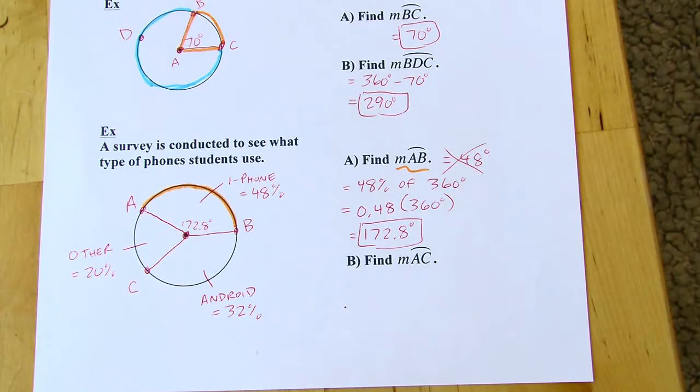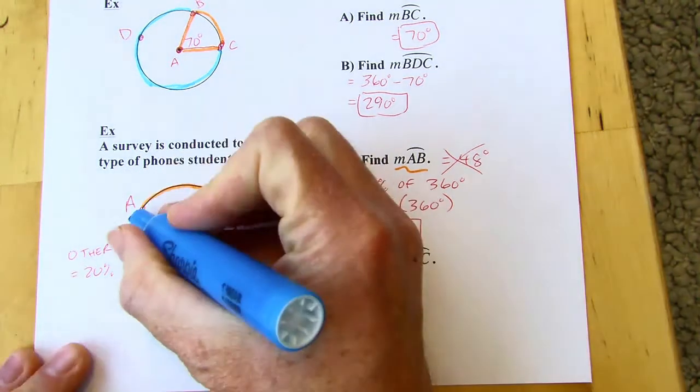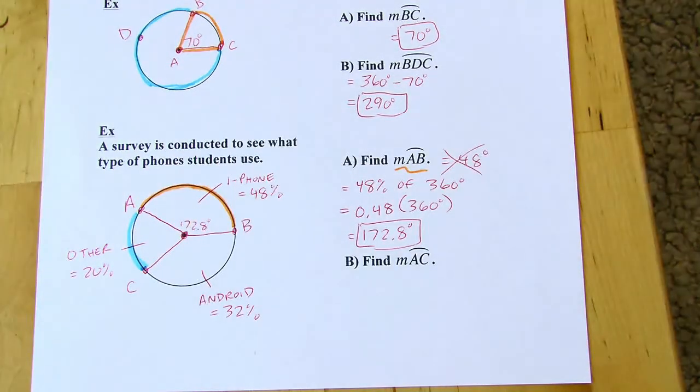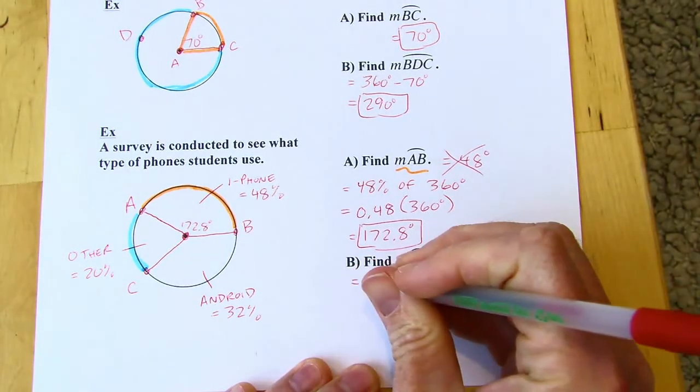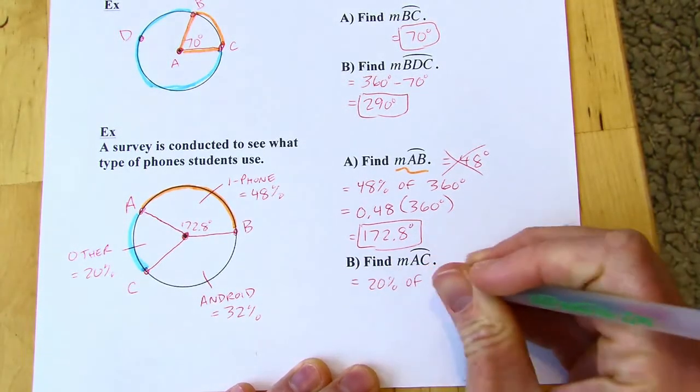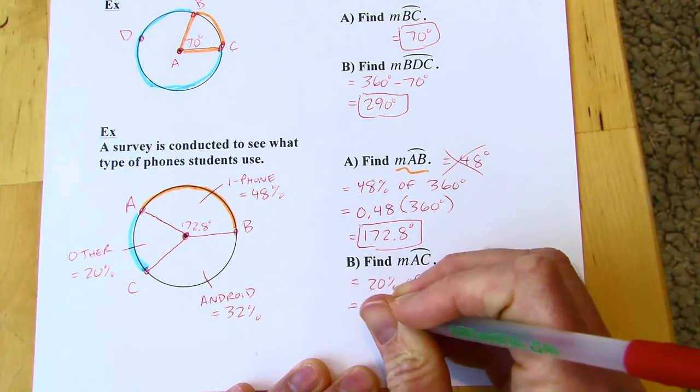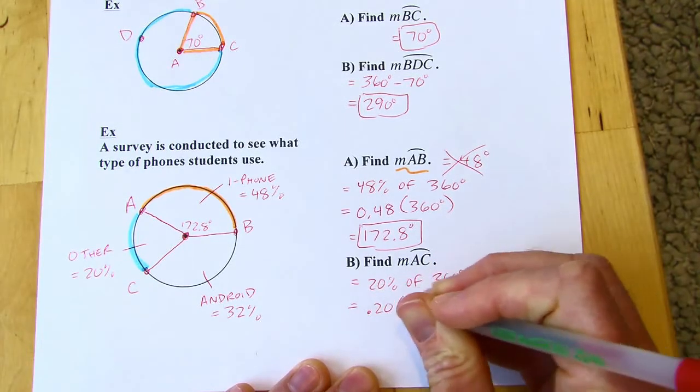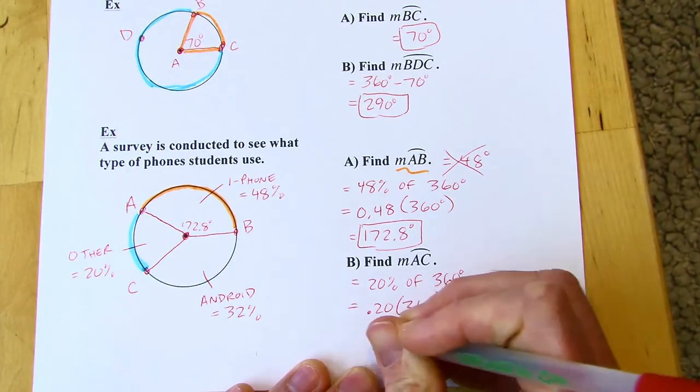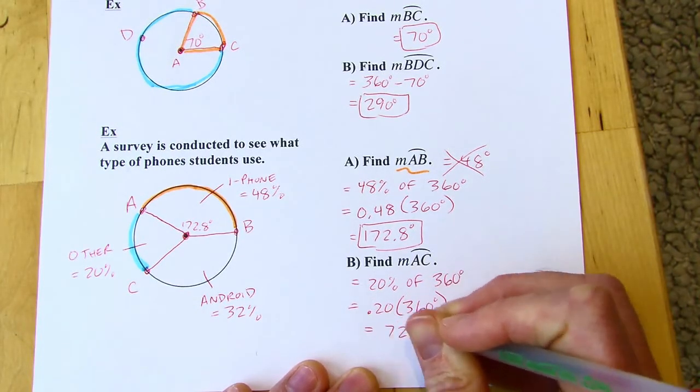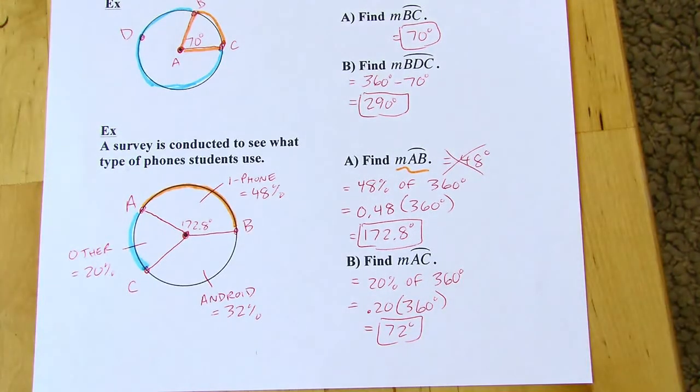Why don't you try AC? You can pause the video if you like. So I'm going to start now. AC is right there. So I can see that's going to be 20% of 360 degrees. And that should come out to 72 degrees. I'm just going to double check. Yeah. 72 degrees. That's that page. I'm going to move on to the next page.